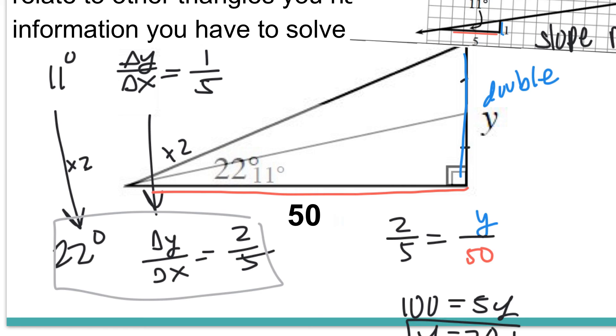Now if that doesn't make sense, I'll walk around and help you for a little bit. But again, the process that I just did right now is: if my slope angle doubles, then so does my general slope ratio.